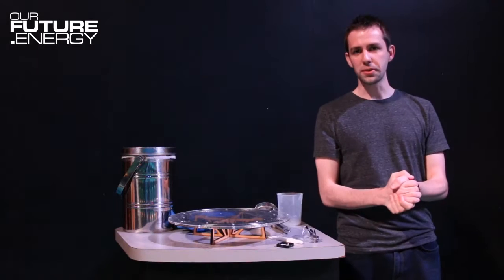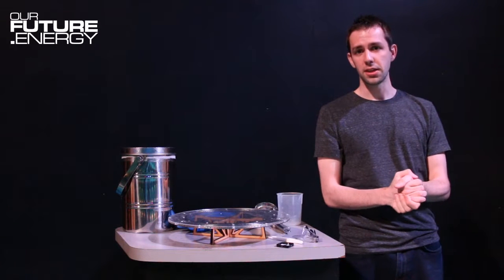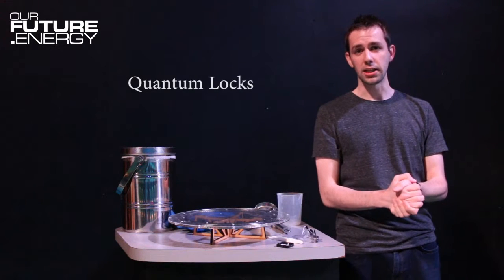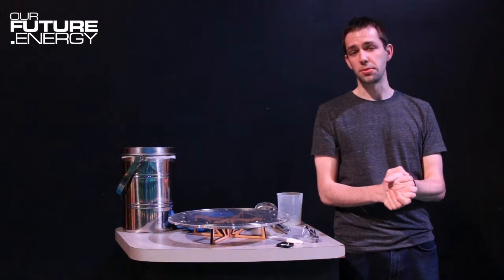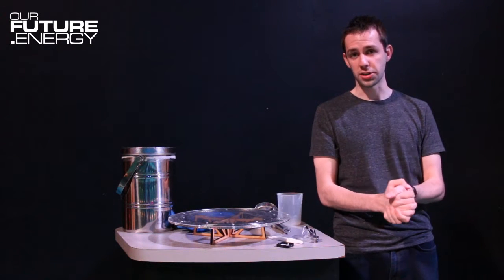When the cooled superconductor is placed in another magnetic field it pins or quantum locks in place, allowing it to levitate above the track. As long as it remains cooled it will remain locked in place, allowing it to move along the track whilst producing no friction.